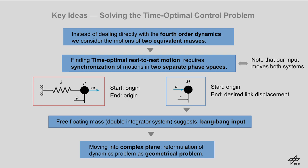Since we consider rest-to-rest motions, the system must start and end its motion with zero joint deflection. This means the corresponding motion of the oscillating mass must start and end at the origin of the phase plane. In contrast, the free-floating particle whose position encodes the center of mass position of the system must start its phase-space motion at the origin, but must end it at the desired link position.